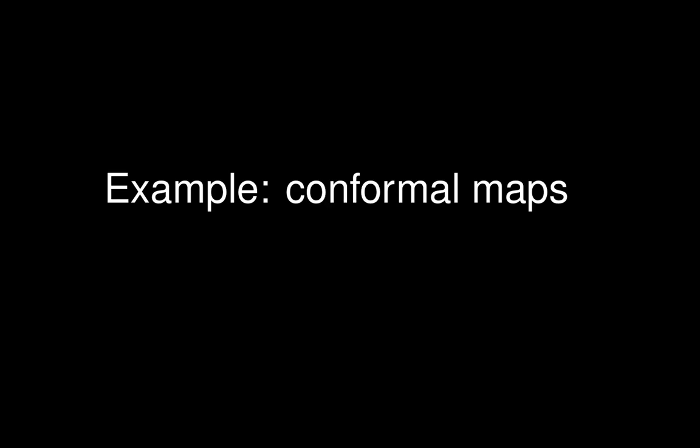This is the 17th and final lecture in a series of lectures giving an introduction to exterior differential systems. In this lecture we want to give a simple example — the example of conformal maps — and see how we can take advantage of the notion of characteristic variety and the notion of Cauchy characteristics to give some kind of geometric notion about how many conformal maps there are between surfaces.